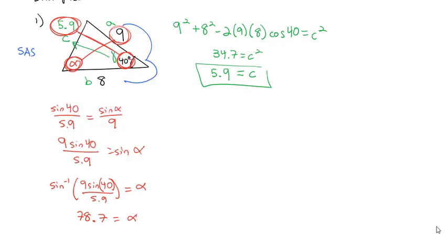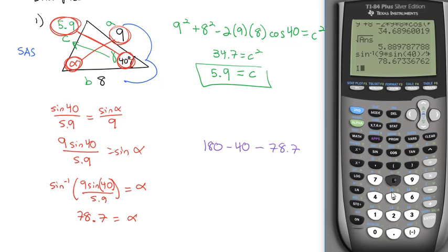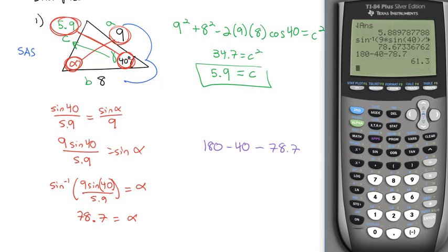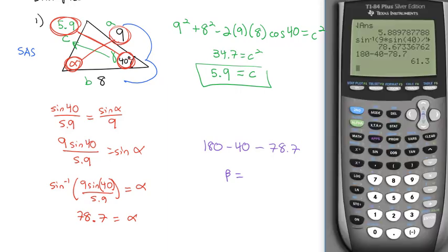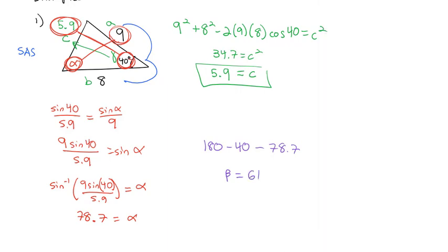To find the last angle beta: a triangle has 180 degrees, minus the 40 degrees given, minus the 78.7 degrees we just found. That gives us beta equal to 61.3 degrees. We've now solved that triangle.